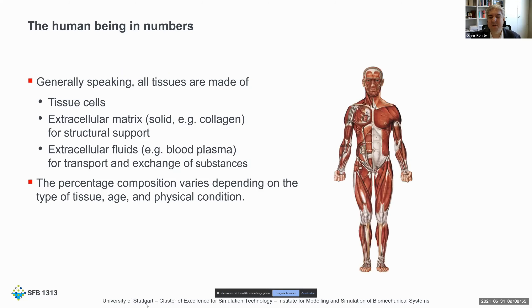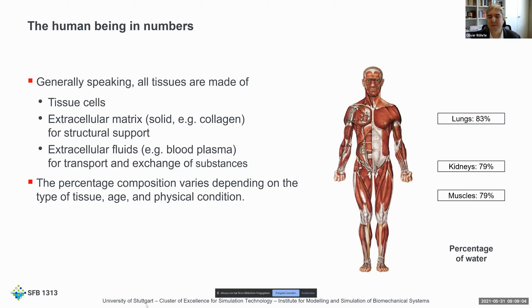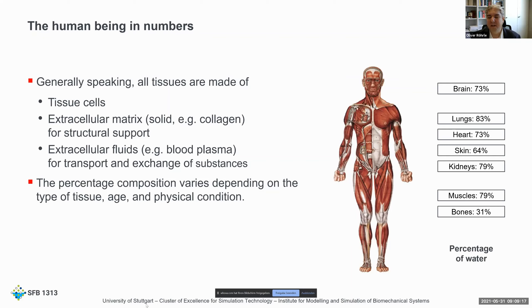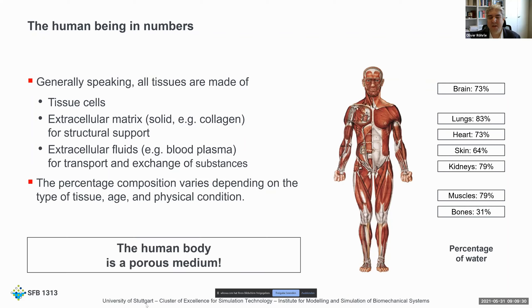What interests us is how we can model the tissues. Tissue is a mixture — it's made up of tissue cells, what we call the extracellular matrix, often collagen solids for structural support, and every single organ and tissue has that. We have extracellular fluids like plasma for the transport and exchange of substances. Just to give some average numbers about water content of particular organs: the lungs have about 83%, the kidneys and muscles about 79%, the brain and heart about 73%, the skin 64%, and even the bones, which you might consider quite dry, still have 31% water. So we have a solid extracellular matrix for structural support, but a high water content — making the human body essentially a porous media. That's where a lot of the research I present today is located, in our collaborative research center headed by Anna Hermick in Stuttgart.